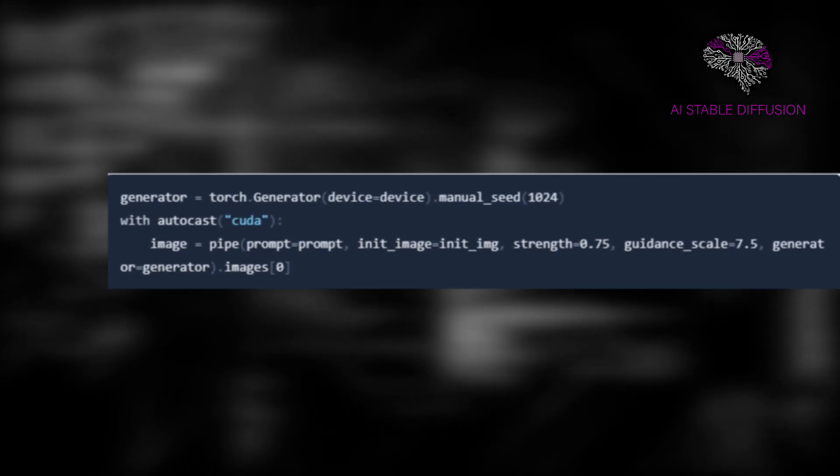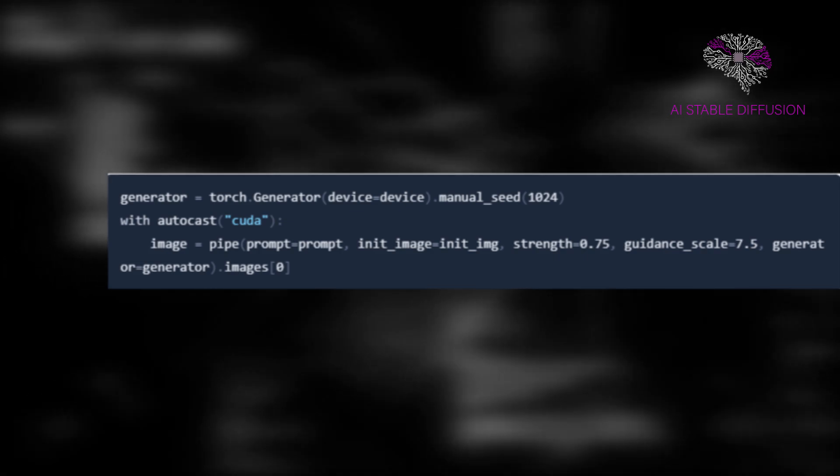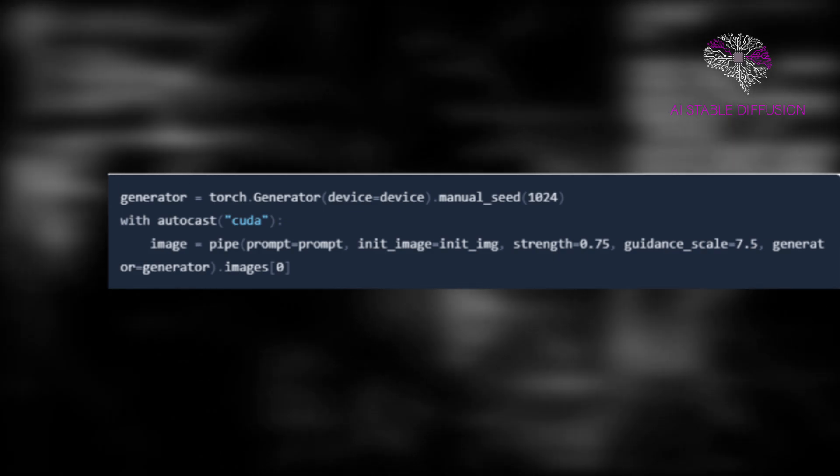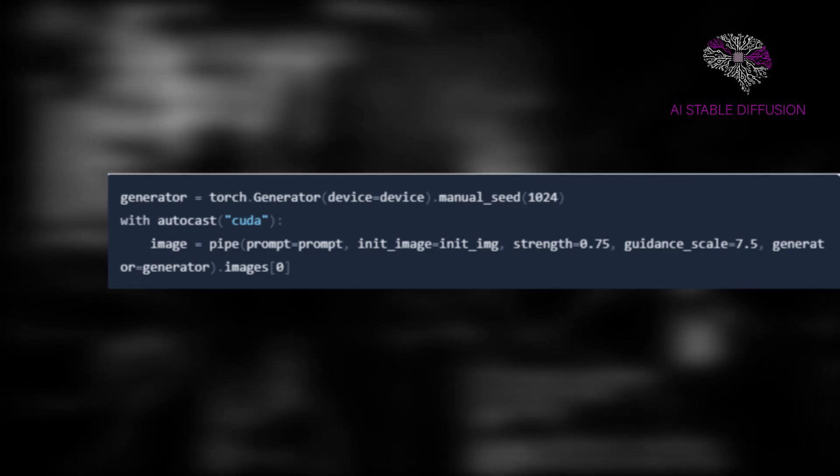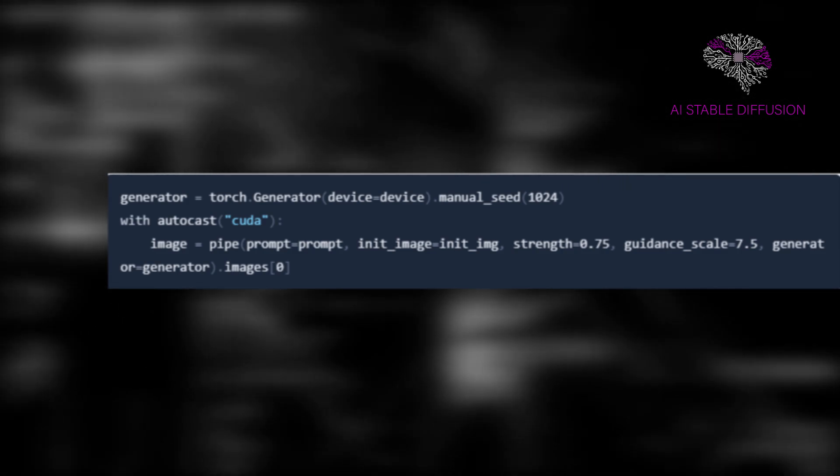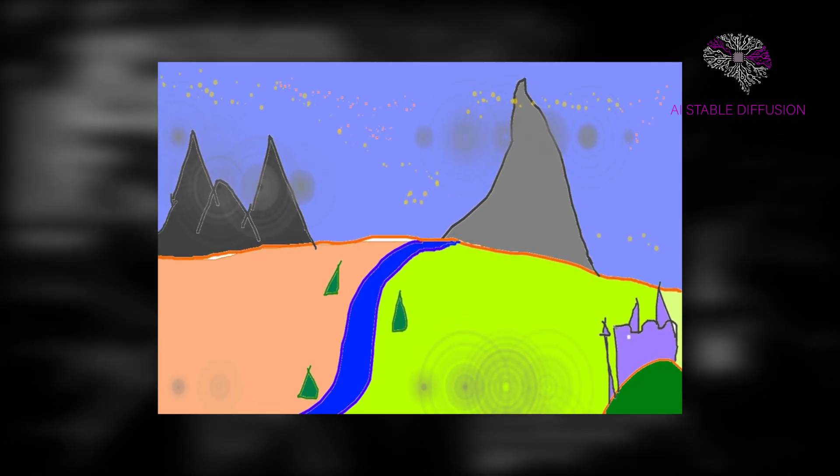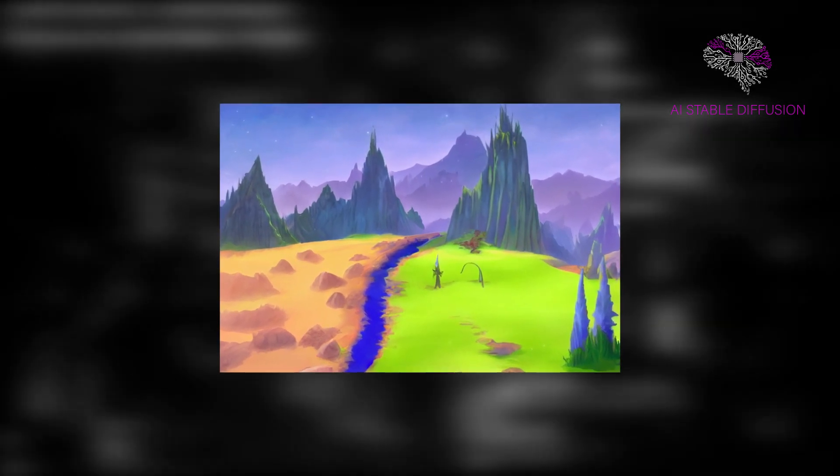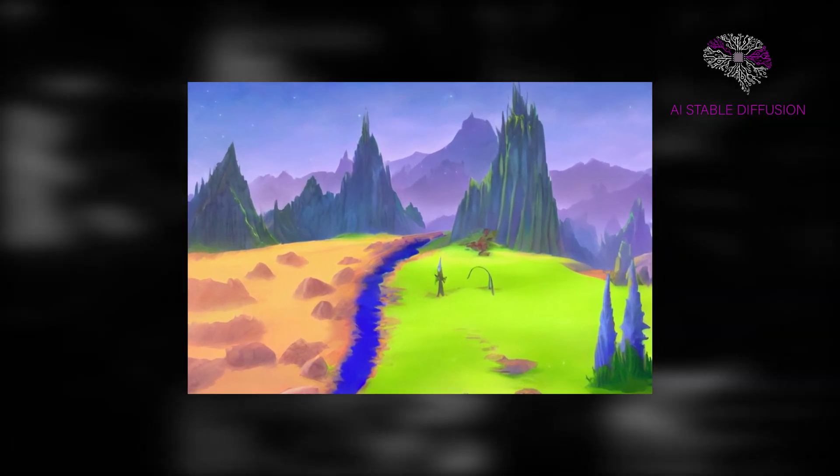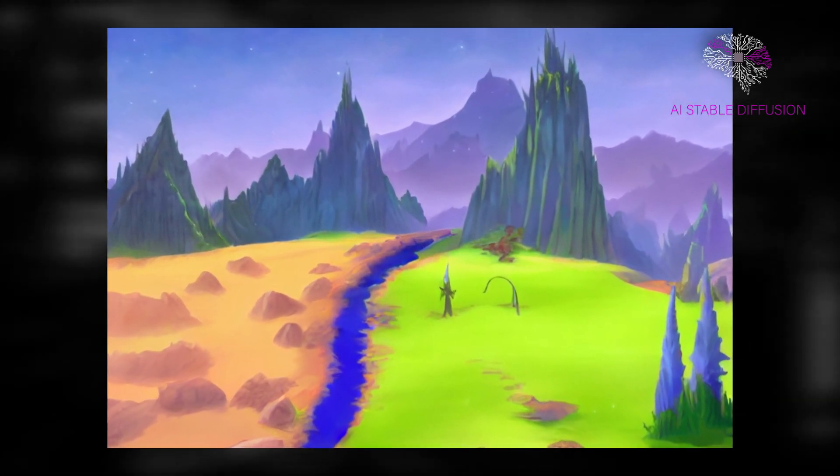Strength is a number between 0.0 and 1.0 that regulates how much noise is added to the input's image. Numerous variations are possible with values that are close to 1.0, but they will also result in images that are not semantically consistent with the output. Simply type the following command in Colab to print the image. And there you have it, a stunning piece of art created by AI from a straightforward sketch. You may also experiment with other parameter settings to see what suits your use case the best.